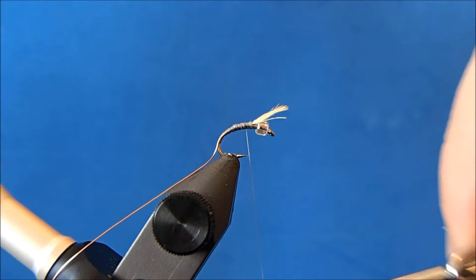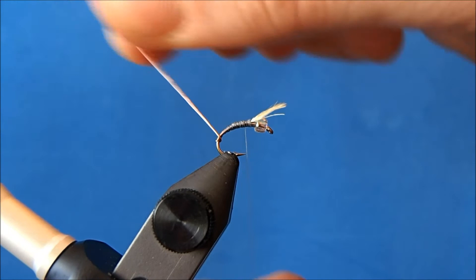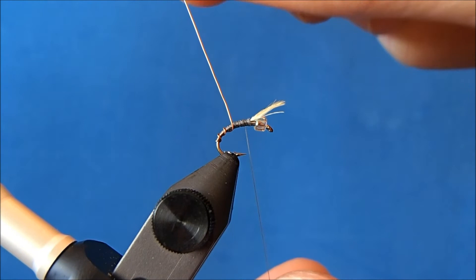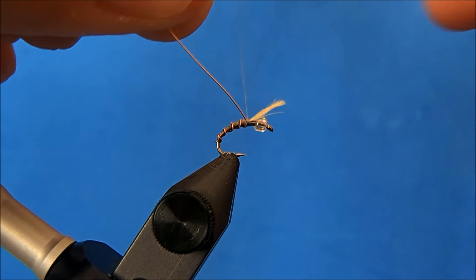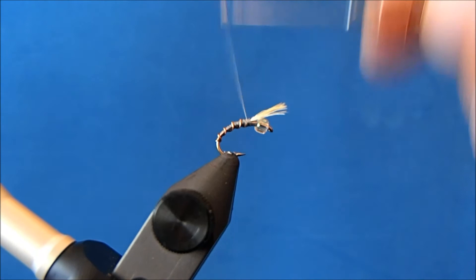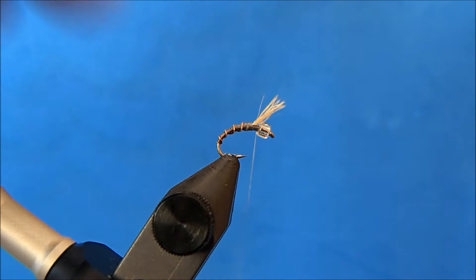And when I'm pleased with that taper I'll bring my rib through. Nice even turns here. And when I get to my thread I'll tie it off and break it. Couple more turns for good measure.